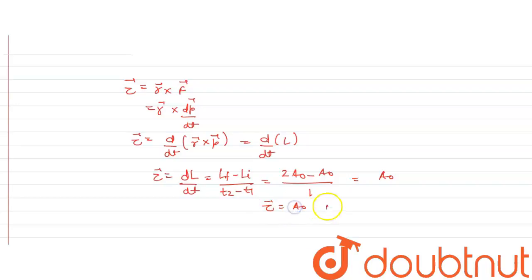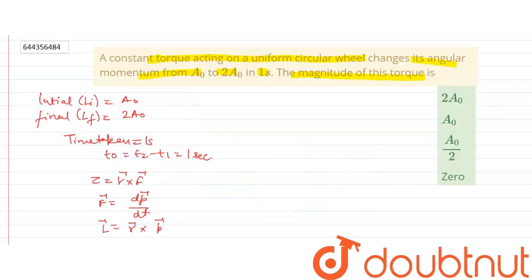So T0 will be A0 Newton meters. So we will check the options. The option first is wrong. Option second is correct. So the answer will be option second. Thank you.